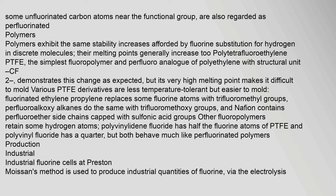Polymers exhibit the same stability increases afforded by fluorine substitution for hydrogen in discrete molecules, and their melting points generally increase. Polytetrafluoroethylene (PTFE), the simplest fluoropolymer and perfluoroanalog of polyethylene with structural unit CF₂, demonstrates this, but its very high melting point makes it difficult to mold. Various PTFE derivatives are less temperature tolerant but easier to mold. Polyvinylidene fluoride has half the fluorine atoms of PTFE, and polyvinyl fluoride has a quarter, but both behave much like perfluorinated polymers.